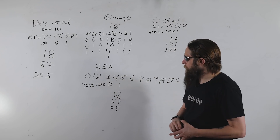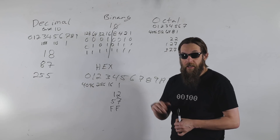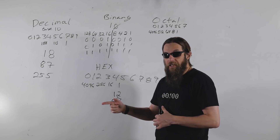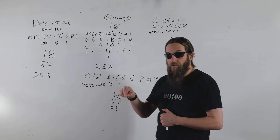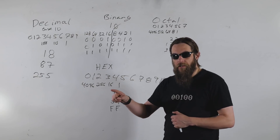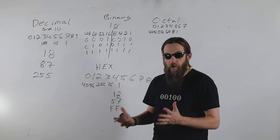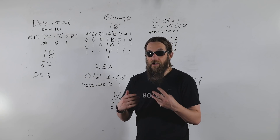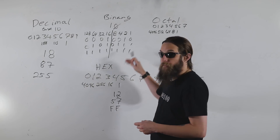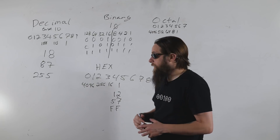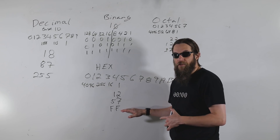All of these are numbering systems — just different ways of displaying the same information. In a computer system or network, the most efficient way to display a number is generally the right way to go, and it needs to be universal. For a large string of binary data, hexadecimal is the most efficient way to display it.